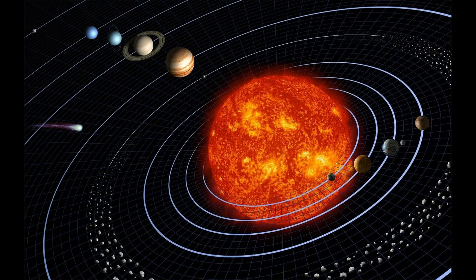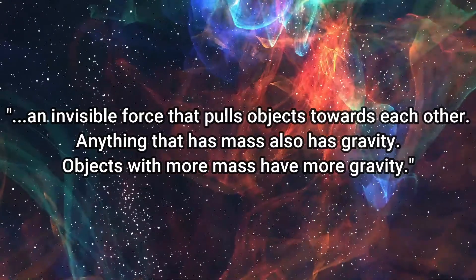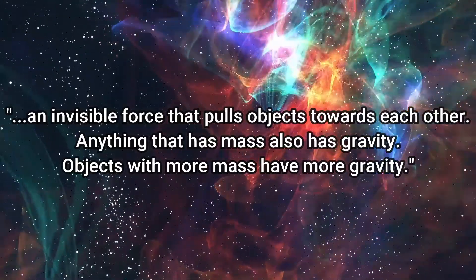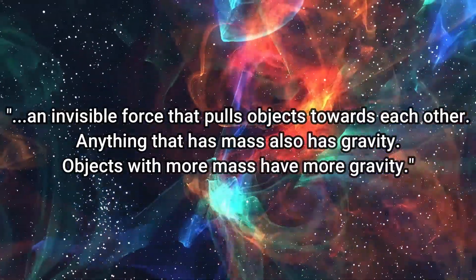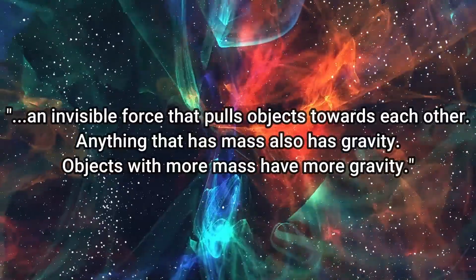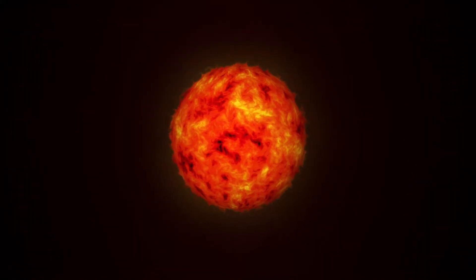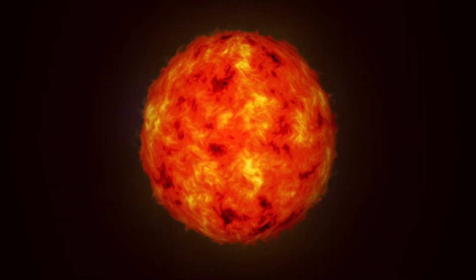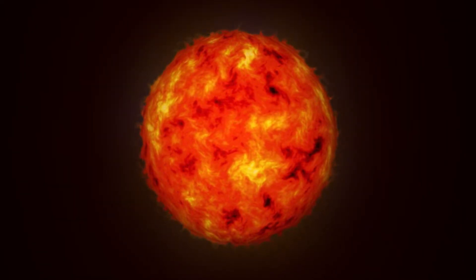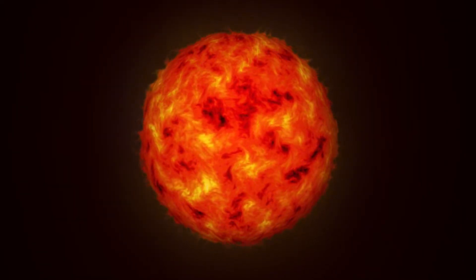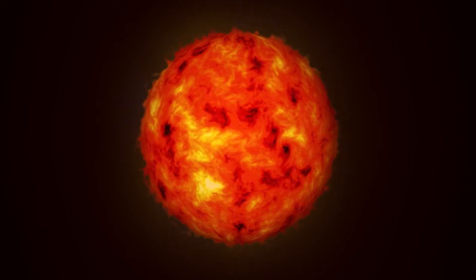Ever wonder why all the planets circle around the Sun? That's because of gravity. NASA science calls gravity an invisible force that pulls objects towards each other. Anything that has mass also has gravity, and objects with more mass have more gravity. I got this definition from the NASA Space Place website. The Sun is the biggest and most massive thing in our solar system, which is why the planets are all stuck in their orbit around the Sun.